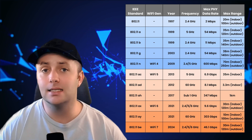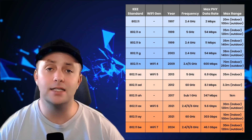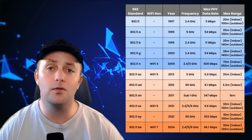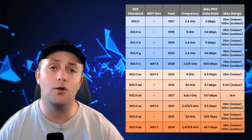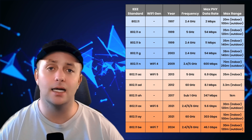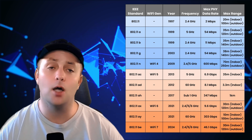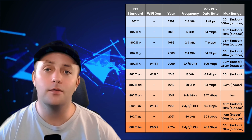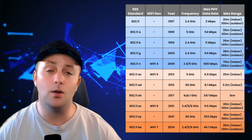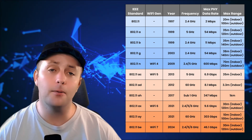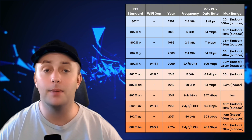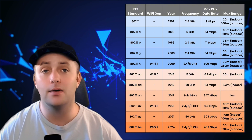For example, Wi-Fi 6 offers faster data transfer rates and better performance in crowded environments like offices, airports, and homes with a lot of devices. If you're using an older router, upgrading to a newer standard like Wi-Fi 6 can make a big difference in your network's performance.